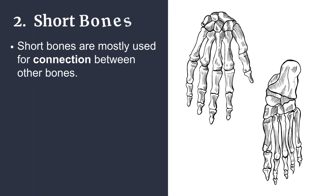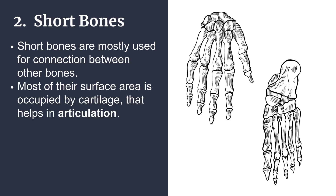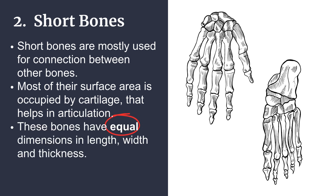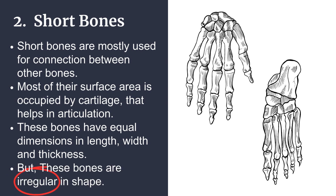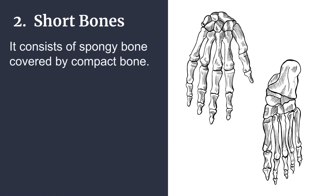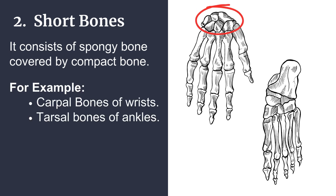Short bones are mostly used for connection between other bones. Most of their surface area is occupied by cartilage that helps in articulation. These bones have equal dimensions in length, width, and thickness, but are irregular in shape. They consist of spongy bone covered by compact bone. For example, carpal bones of the wrists and tarsal bones of the ankles.